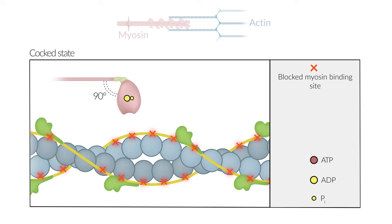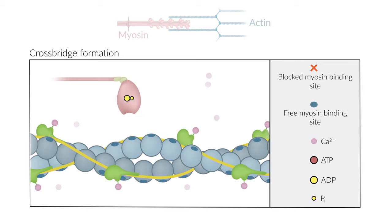Muscle cell activation is associated with an influx of calcium ions into the cell. Calcium binds to troponin, thereby changing its conformation. In turn, tropomyosin is displaced from the myosin binding site on the actin filament. Now the myosin head can bind to the actin filament. This process is termed cross-bridge formation.